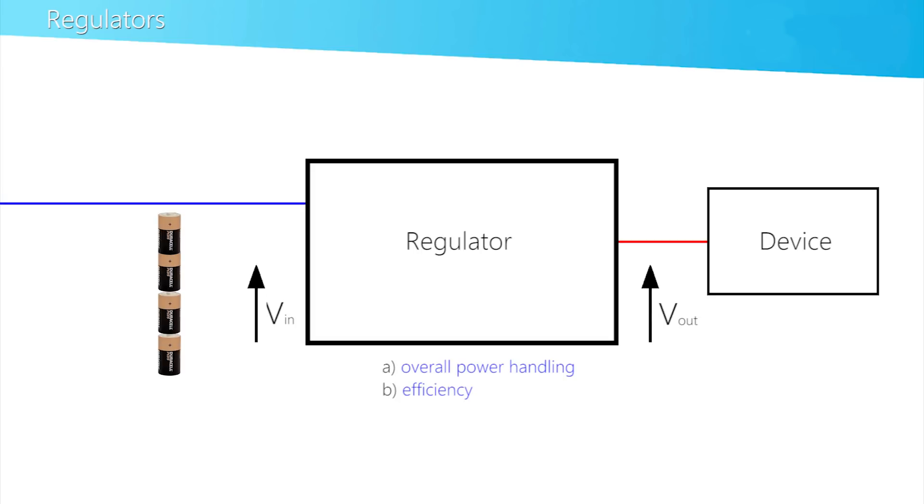essentially the voltage and current being controlled, and b, the efficiency of the device. Battery charge is at a premium, and the regulator should consume the absolute minimum power as it operates.